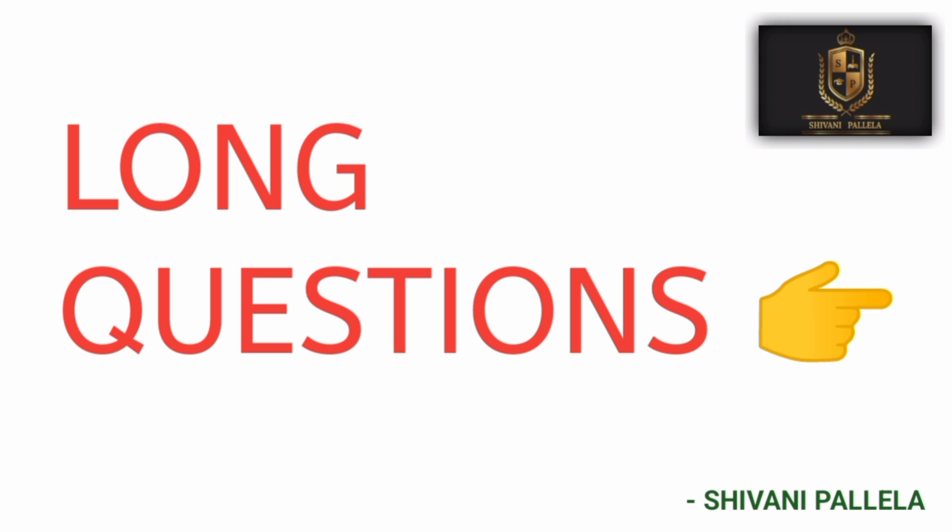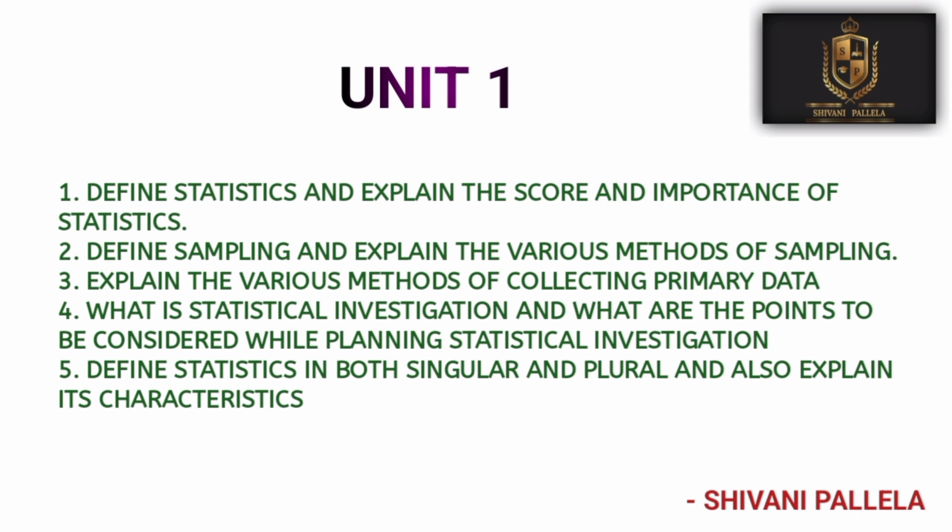Now for long questions: from Unit One you will get theory. If you are attempting a theory question, you must write side by side three to three-and-a-half pages in your answer booklet to score full marks. Whatever you write should be logical and related to the question — don't write unwanted stuff. From Unit One I have given five important questions; if you are perfect with these five questions, you can score 12 marks in long and 4 marks in short — 16 marks total.